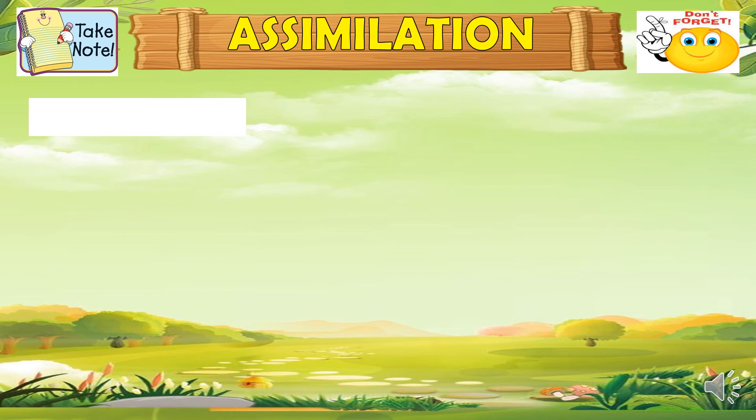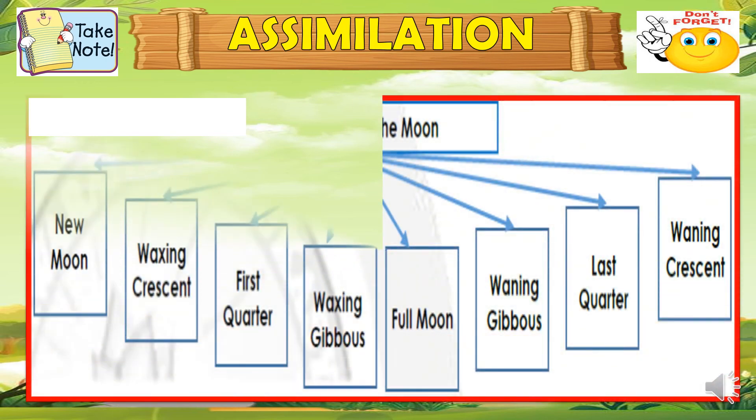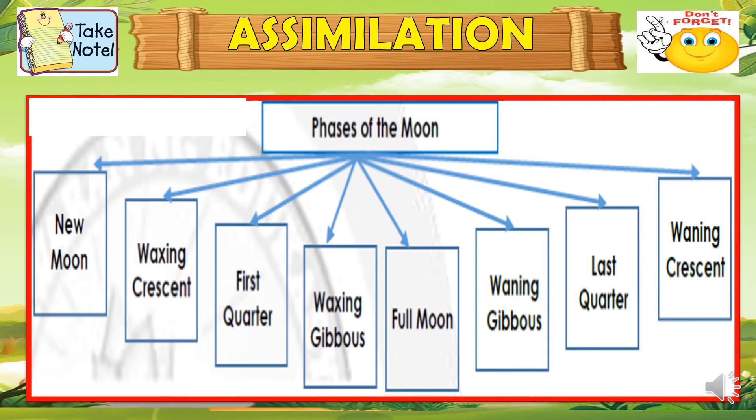For the summary, let us take note: there are 8 phases of the moon. These are: the new moon, the waxing crescent, first quarter, waxing gibbous, full moon, waning gibbous, last quarter, and the waning crescent.